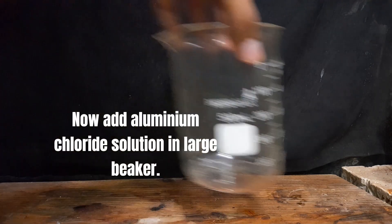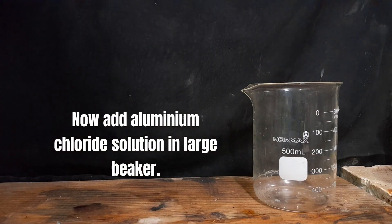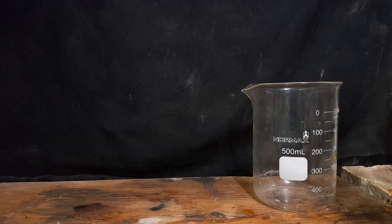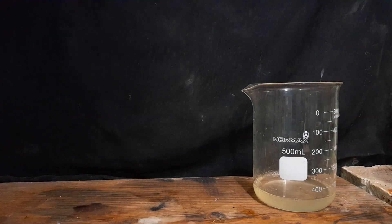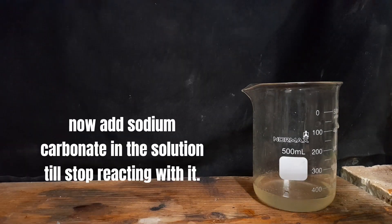Now add aluminum chloride solution in large beaker. Add sodium carbonate in the solution till stop reacting with it.